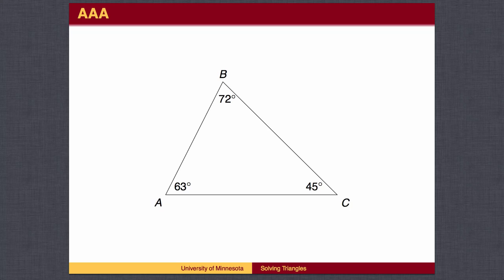When given all three angles, there's nothing we can do. The triangle's shape has been determined, but not its size. The sides of the triangle can have any length.